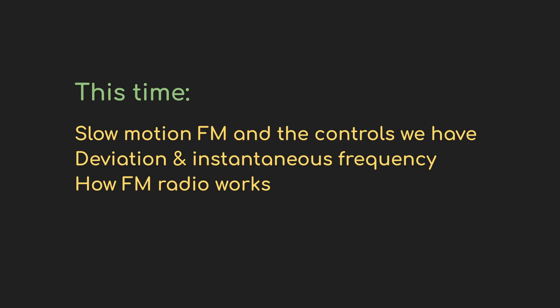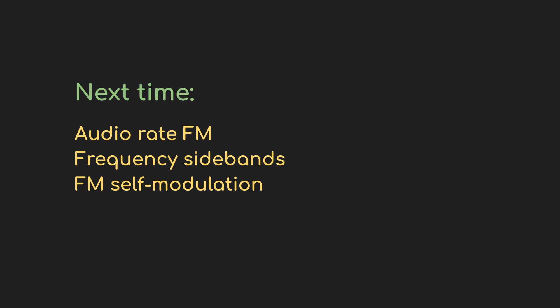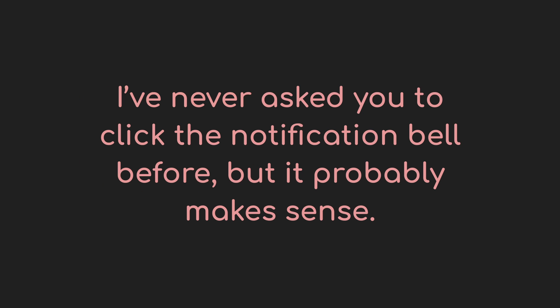Okay, that's it for this first video. So far we've looked at the basic operation of FM at a slow rate and the controls we have over it. We also introduced a couple of terms that we're going to come back to, like deviation and instantaneous frequency. And we got a sneak peek at what happens when things speed up — that's where we're going to pick up next time. Thanks for coming on this FM adventure with me. If you like this video, make sure to like and subscribe, and you might want to hit the notification bell so you find out when future videos in this series land. Thanks for watching. I'll see you later.